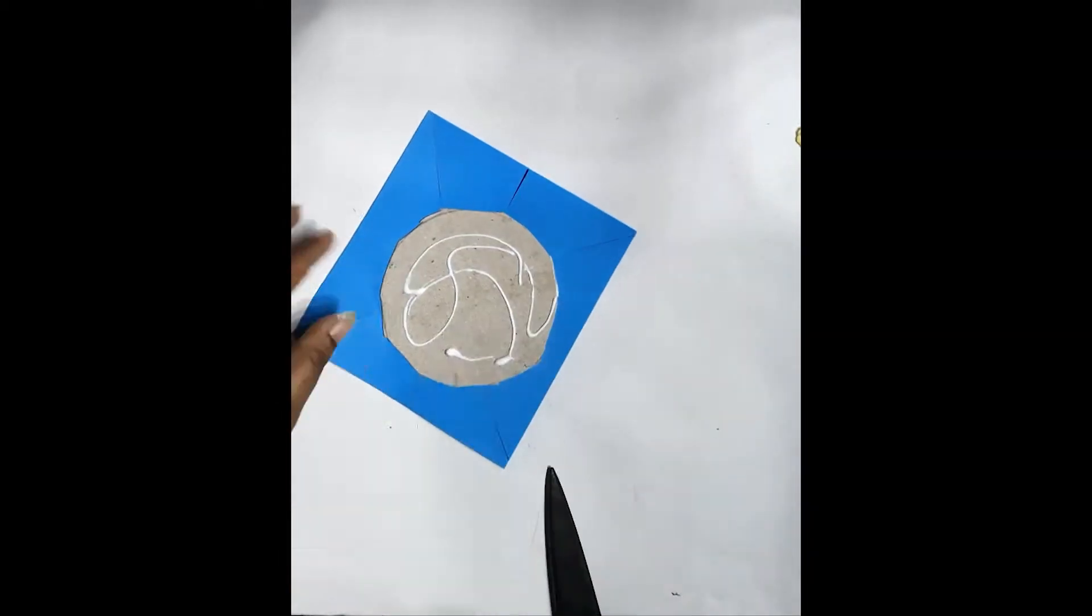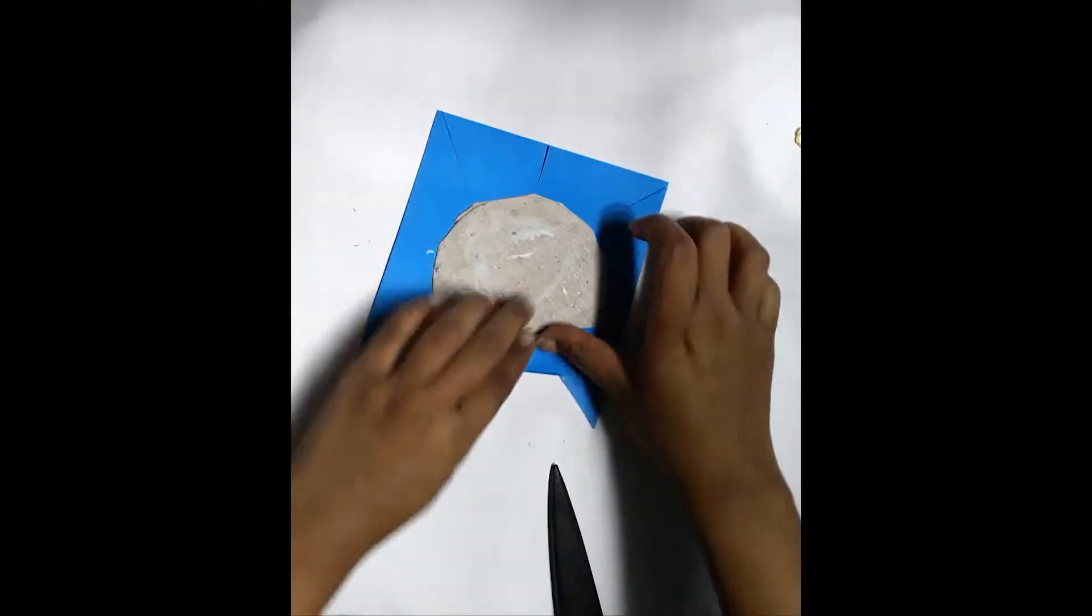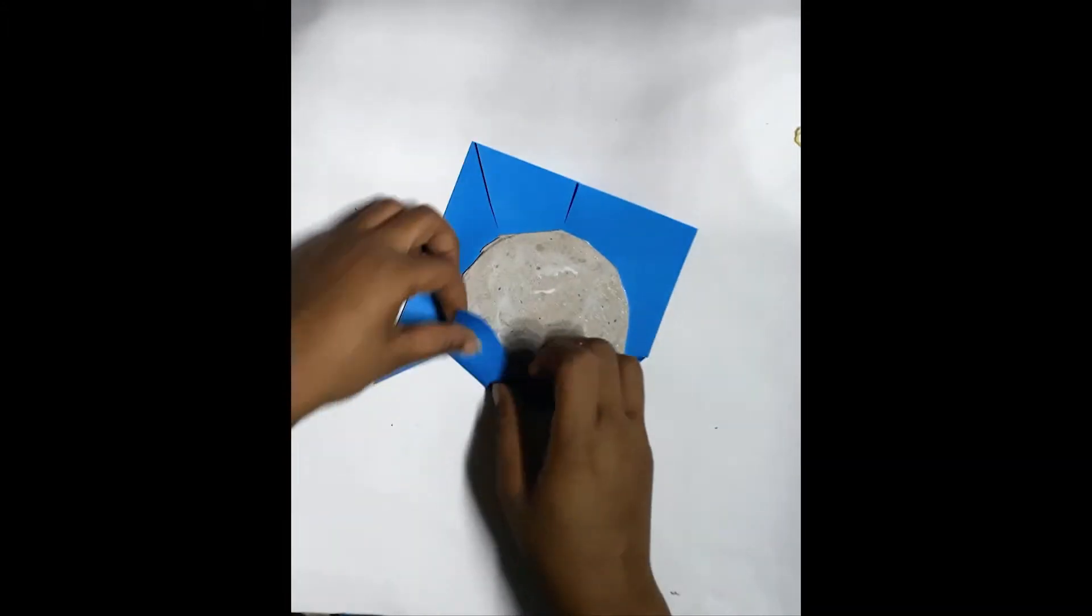Glue its corners and crease it for permanent attachment. Keep attaching.